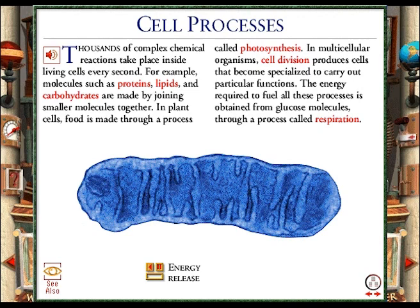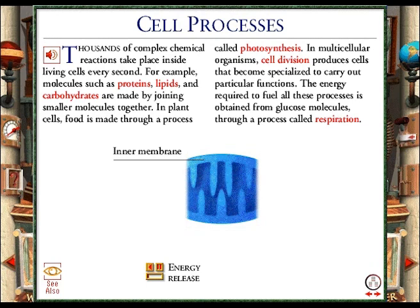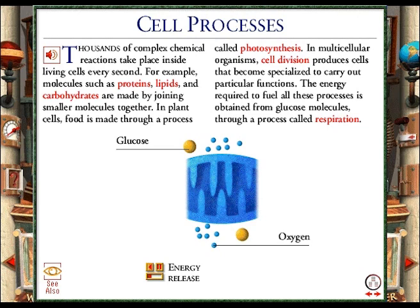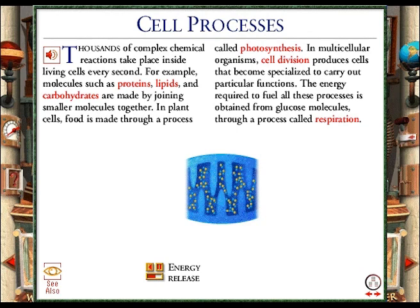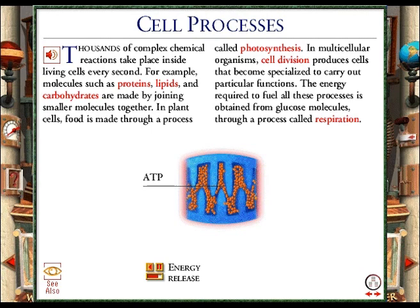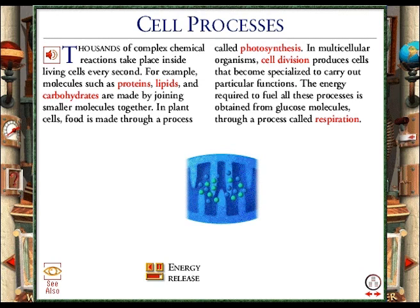This is a mitochondrion, the powerhouse of a cell. In this diagram, you can see the inner membrane and the matrix of the mitochondrion, where many of the reactions involved in respiration take place. During respiration, glucose and oxygen are used to produce energy. First, glucose molecules are broken down into simpler molecules called pyruvate. This happens in the cytoplasm of the cell. Then pyruvate and oxygen molecules enter the mitochondrion. In a series of reactions, the pyruvate is broken down further and combines with the oxygen molecules, producing energy. This energy is stored in a chemical called ATP until it is needed to fuel processes in other parts of the cell. Carbon dioxide and water are produced as waste products.